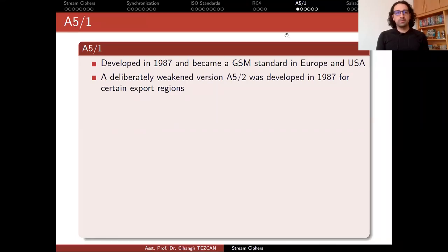Another stream cipher that is important for network security is A5/1, which is a standard for 2G GSM communications. It was developed in 1987 and became a GSM standard in Europe and USA. A deliberately weakened version A5/2 was developed also in 1987 for certain export regions. A5/1 was initially kept secret, but it was reverse engineered in 1999.